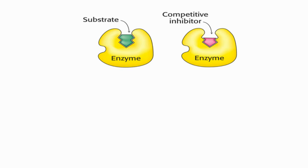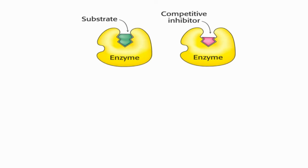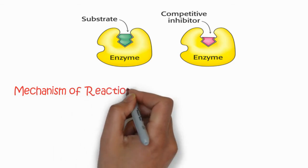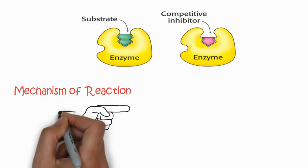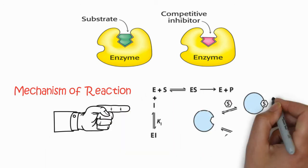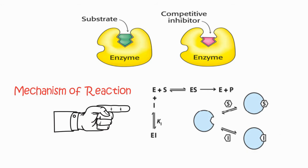In competitive inhibition you can see the substrate is green in color and the enzyme is yellow. The competitive inhibitor competes for the substrate binding site and there is no further reaction. The mechanism includes the enzyme reacting with substrate to form an ES complex, then enzyme and product are released, while the inhibitor is directly attached to the enzyme, and this enzyme-inhibitor complex is reversible.